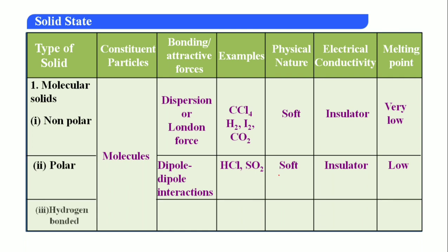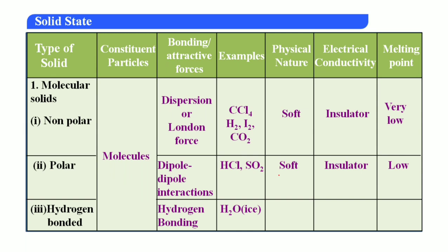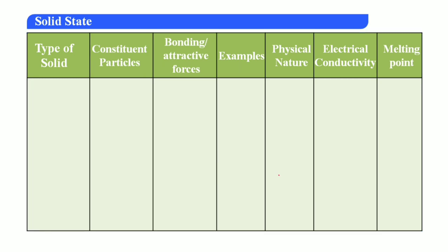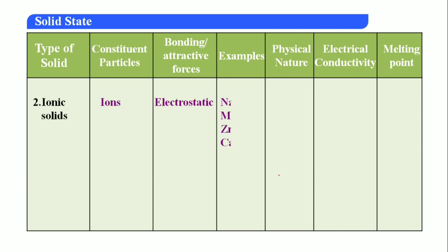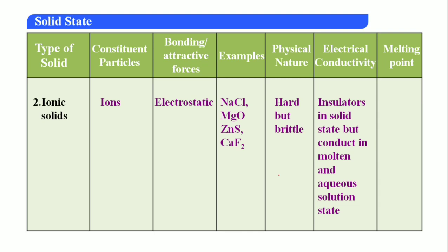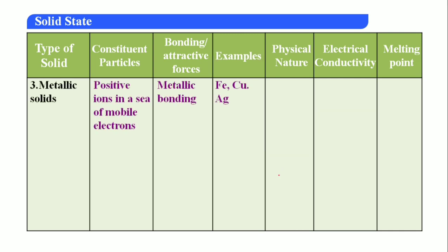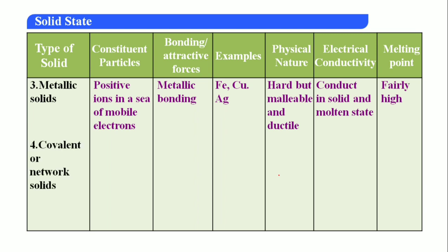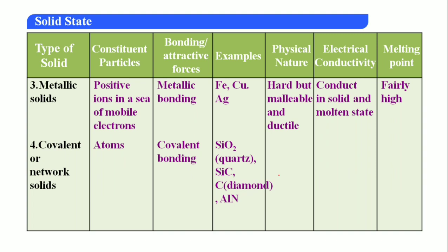Hydrogen-bonded molecular solids: hydrogen bonding; constituent particles are molecules; examples are H₂O and ice; physical nature is hard; insulators; low melting point. Ionic solids: constituent particles are ions; electrostatic force of attraction; examples NaCl and MgO; hard but brittle; insulators in solid state but conduct electricity in molten and aqueous solution states — very important; high melting point. Covalent/network solids: atoms are constituent particles; covalent bonding; examples SiO₂, SiC, diamond, graphite, AlN; insulators; very high melting point.